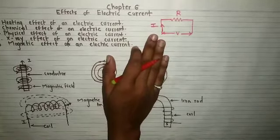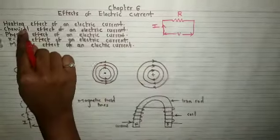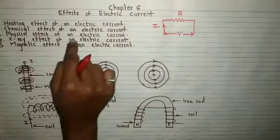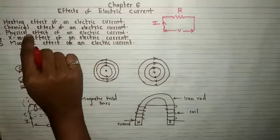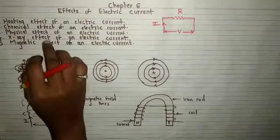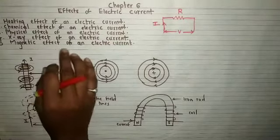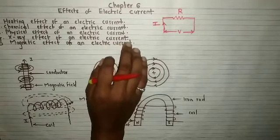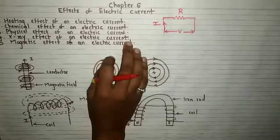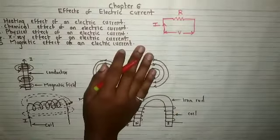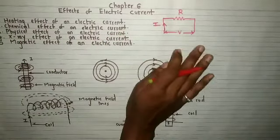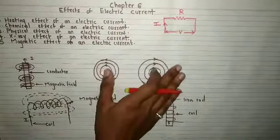In this chapter, what we are going to see is: heating effect of electric current, chemical effect of an electric current, physical effect of an electric current — which means what will current do to our human body — X-ray effect of electric current, and magnetic effect of electric current. When the question is asked to explain effects of electric current, just mention these effects and explain any two of them.